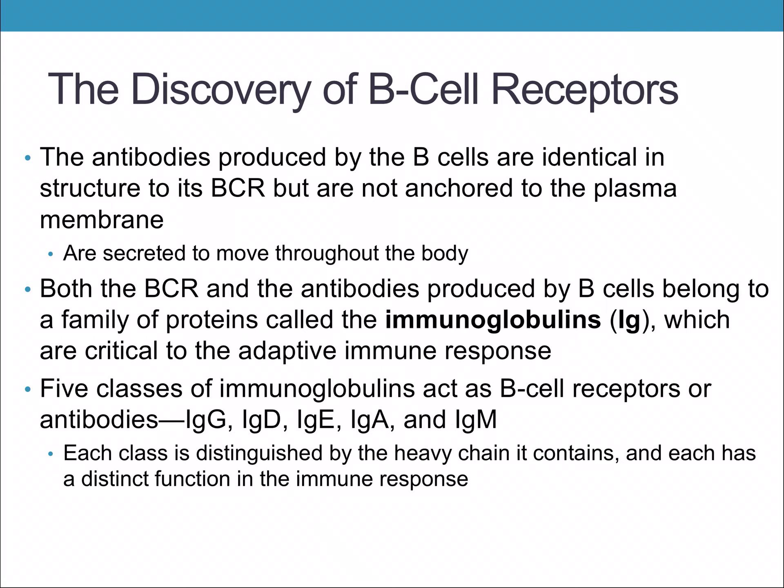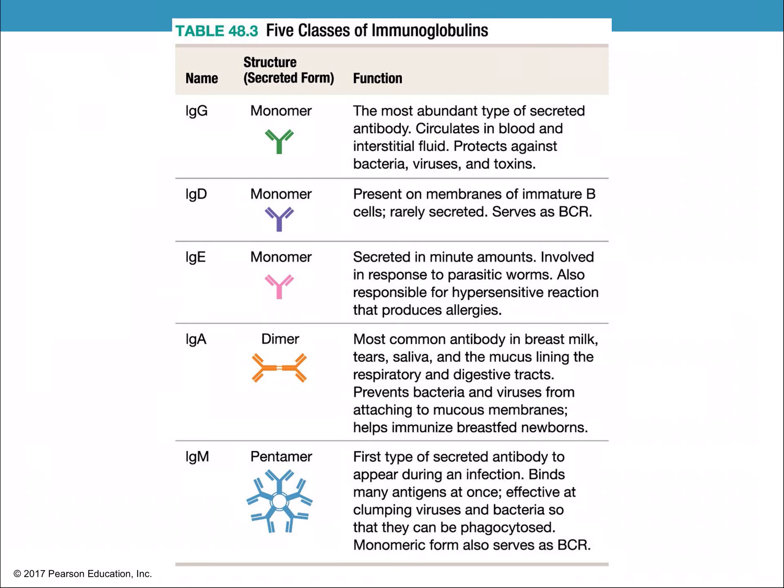There are five classes of immunoglobulins that act as B cell receptors or antibodies: IgG, IgD, IgE, IgA, and IgM. These different types of antibodies are distinguished by the heavy chain they contain, and each has a distinct function in the immune system. This isn't something you'd need to memorize — it would typically be used as a reference.